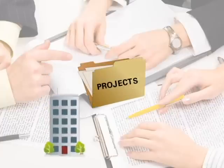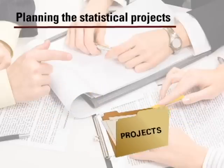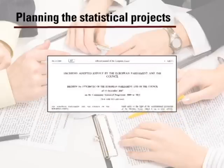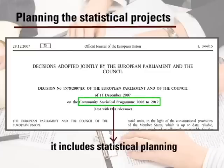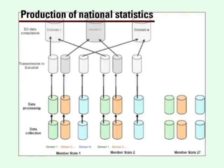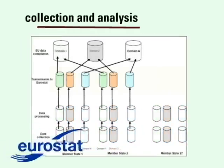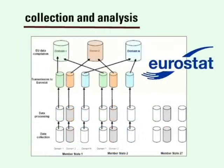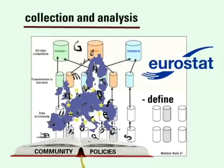Both the National Statistics Institutes and Eurostat participate in planning the statistical projects to be carried out. In a similar way to what happens in each individual country, the European Statistical System has a European Statistical Programme which includes statistical planning for a period of five years. Production of national statistics generally corresponds to the authorities of member states. In turn, Eurostat includes data provided by the states, analyses it, and on the basis of this provides comparable and harmonized figures, making it possible to define, undertake, and analyze community policies.